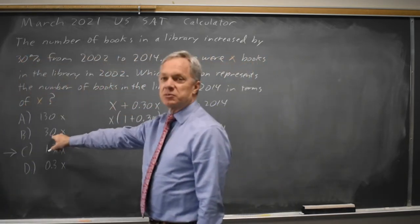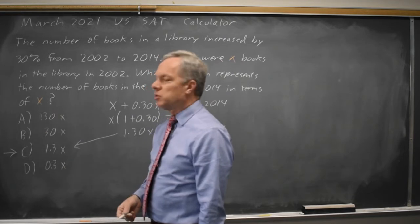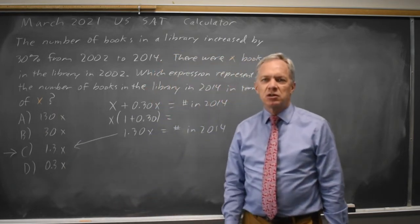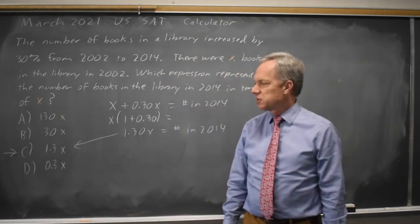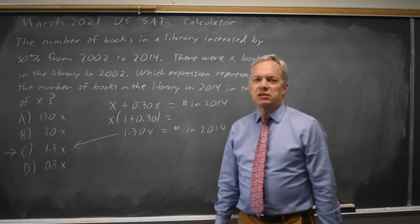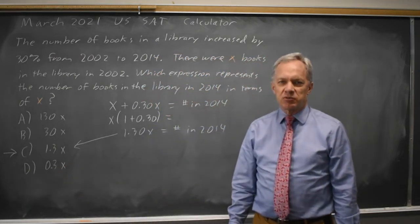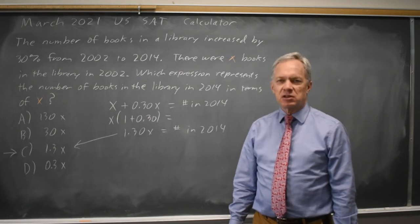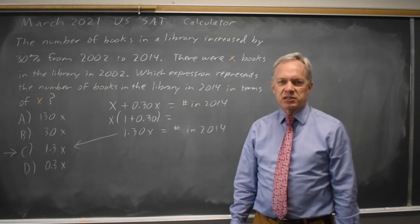Choice B, 30 times the number of books, or choice A, 130 times the number of books, are far greater than the 30% increase. And choice D, 0.3X, is a substantial decrease in the number of books. So choice C is the only answer that makes sense, and it also matches the algebra.